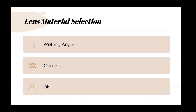When designing a scleral lens for patients with ocular surface disease, their tear film chemistry may be different from a corneal ectasia patient, making them more prone to deposits on the lens surface. Picking out different aspects of the lens such as wetting angle, coatings, and Dk can be really helpful in the initial stages of designing the lens. Wetting angle refers to the ability of liquid to spread across the lens surface — a lens with a low wetting angle allows liquid to spread better and is more wettable.